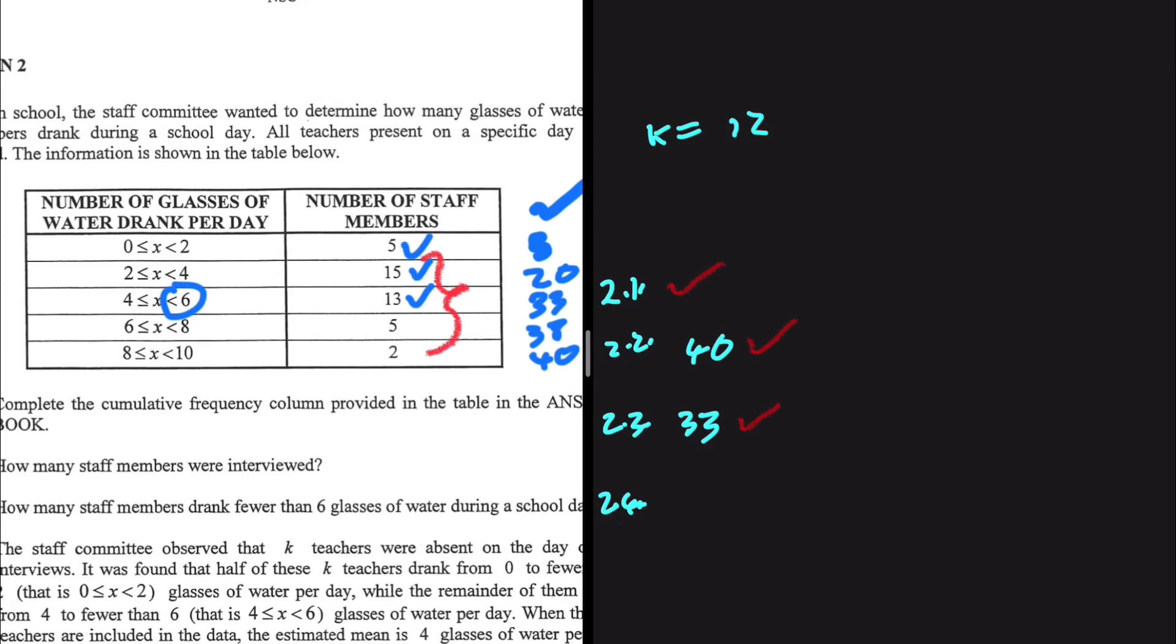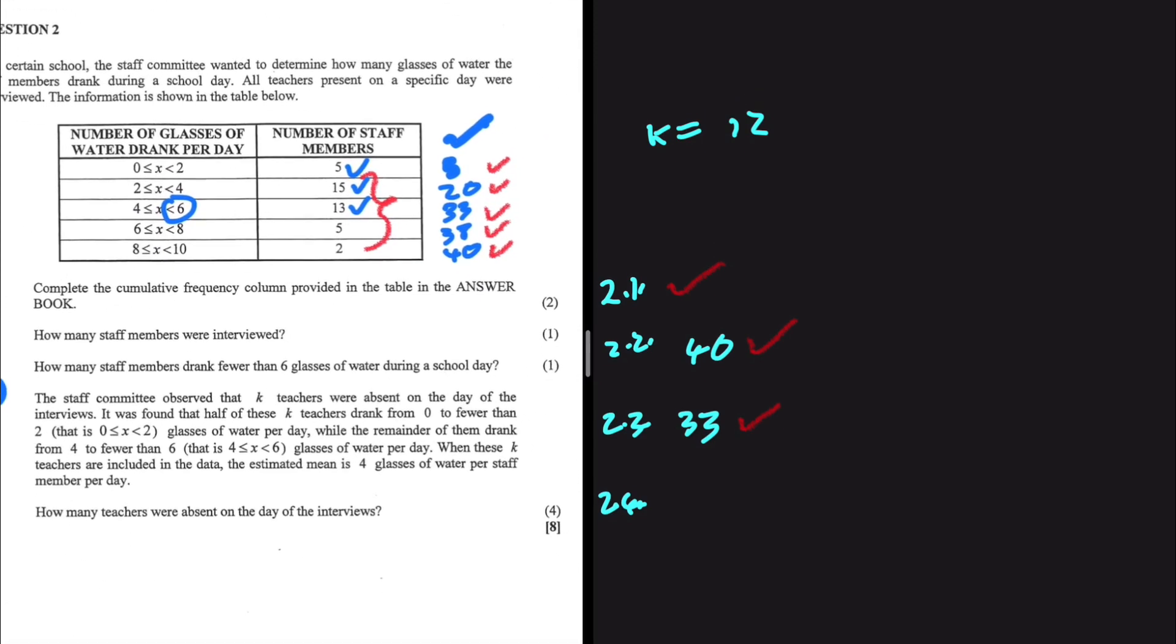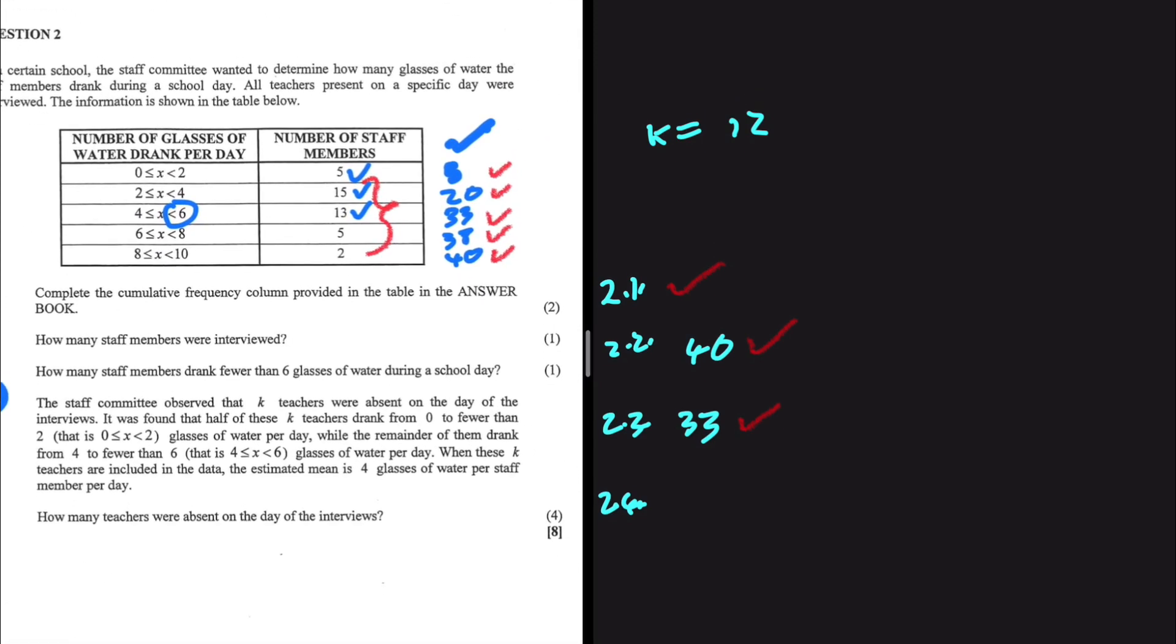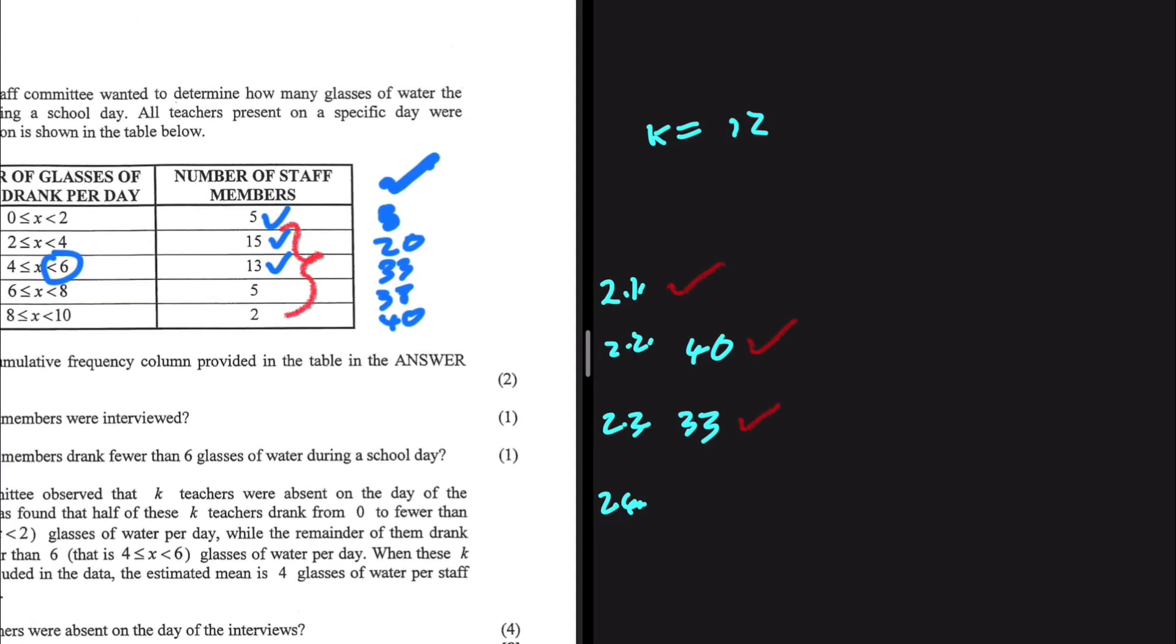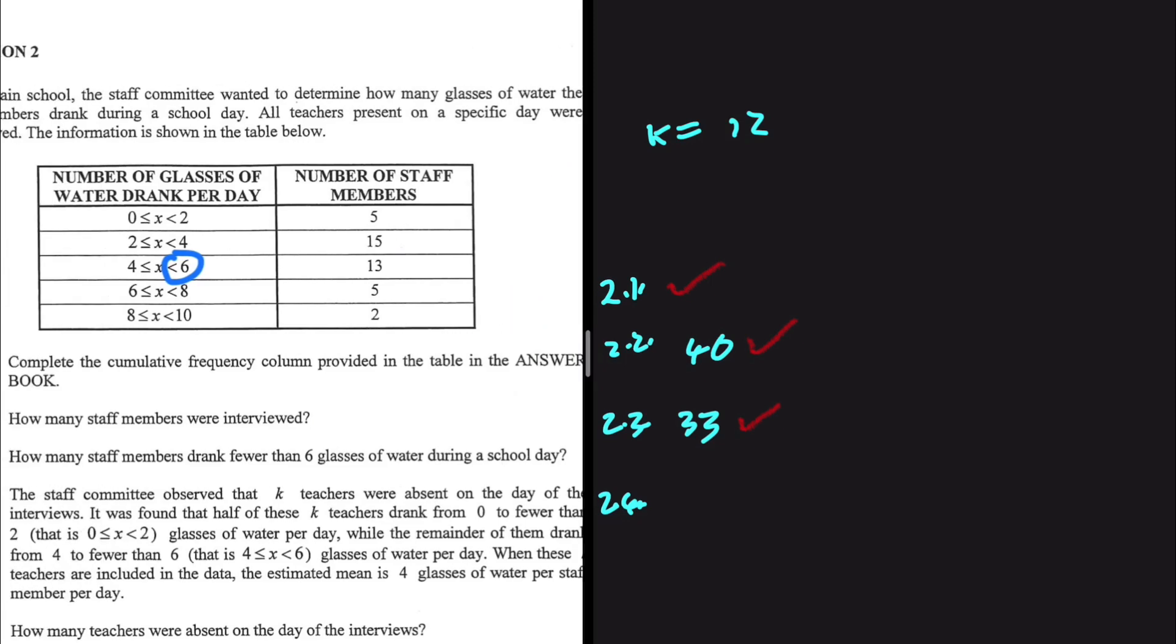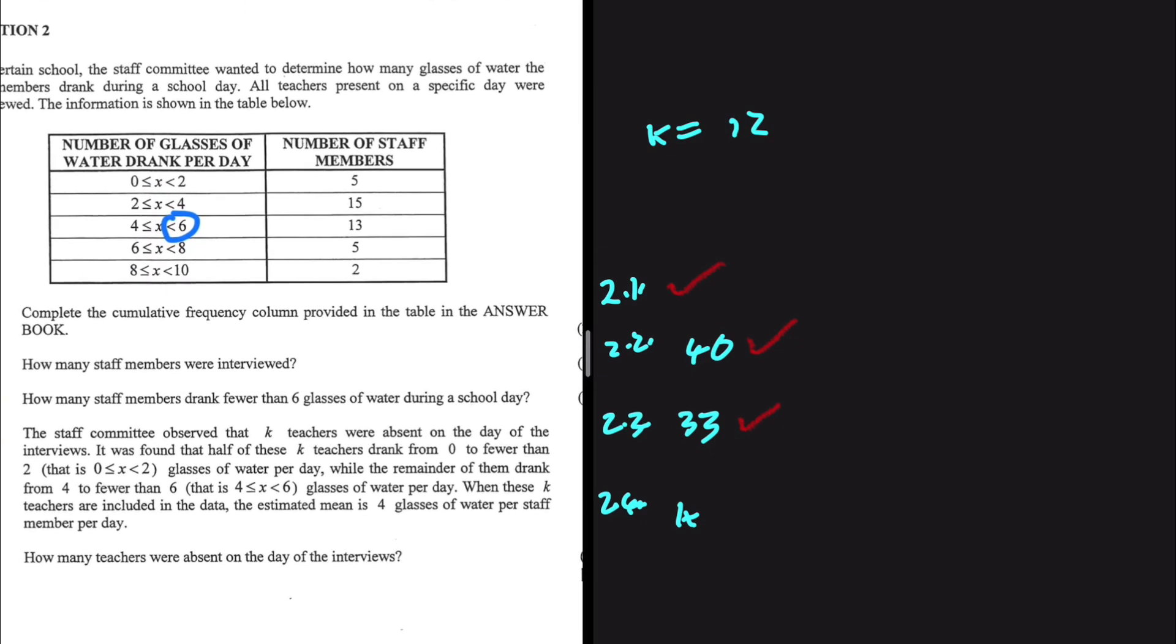So the staff committee observed that k teachers were absent on the day of the interviews. It was found that half of these k teachers drank from zero to fewer than two. Let's make sense of that information from the get-go. Let's look at the column with the number of staff members. I want to show you something.